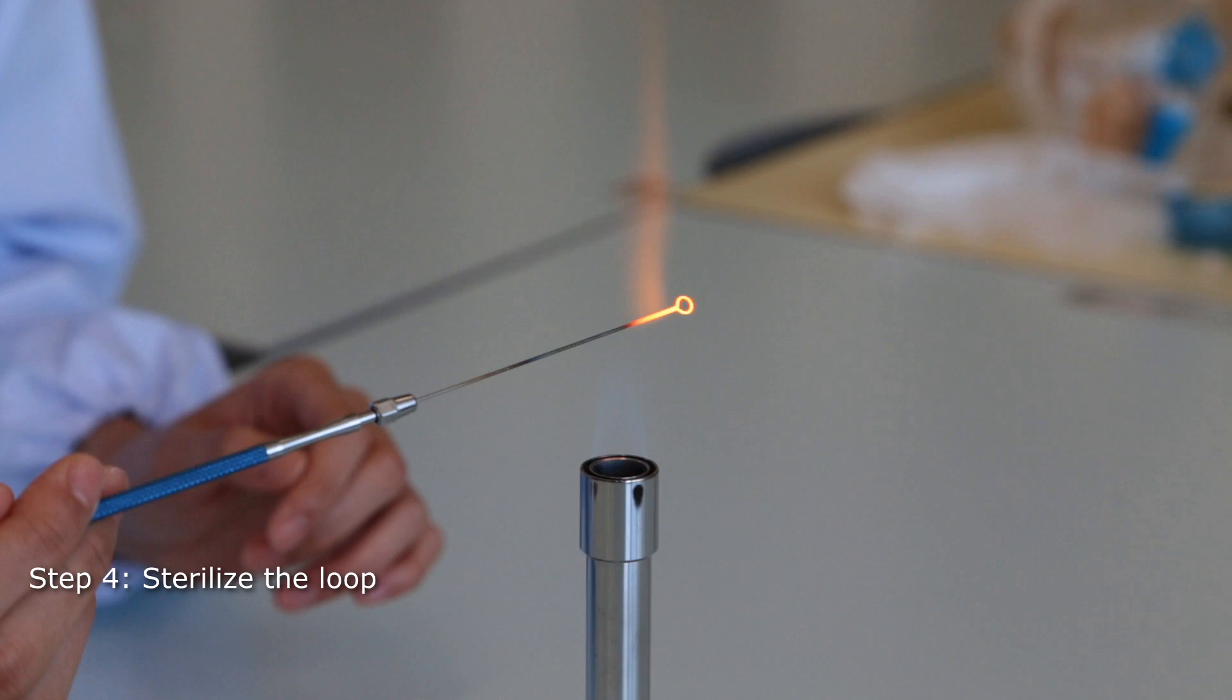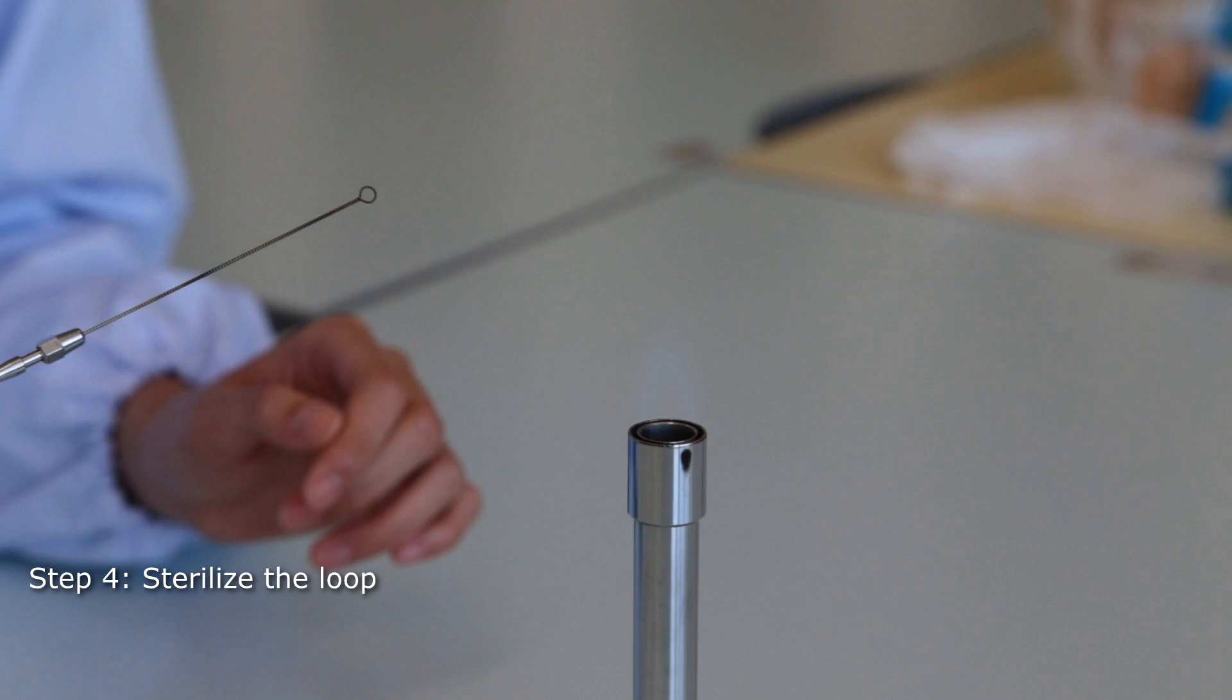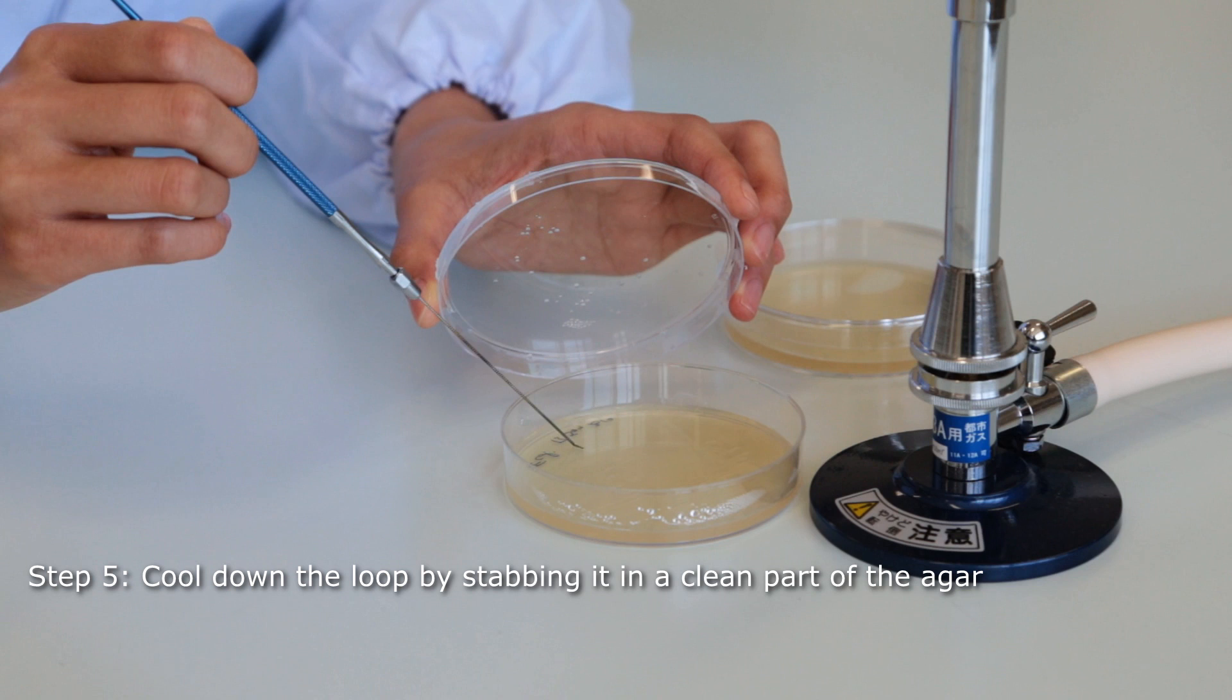Sterilize your loop in the flame. The hottest part of the flame is located just above the tip of the blue cone. Let your loop cool down. To ensure proper cooling, stab your loop in a clean part of the medium once or twice.